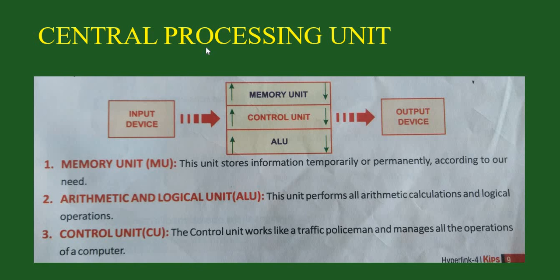Now we will study what is the central processing unit — in short, we call it CPU. When you put your data into the computer through an input device such as keyboard or mouse, processing of the data takes place, and then the result comes from an output device. CPU has three parts: memory unit, control unit, and ALU.